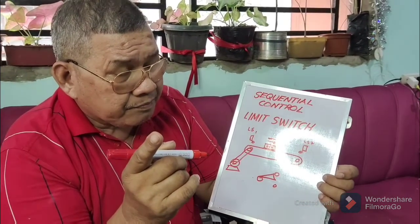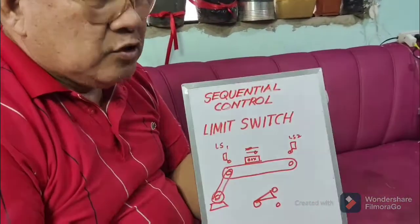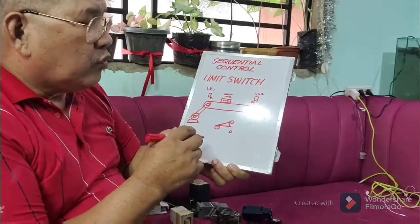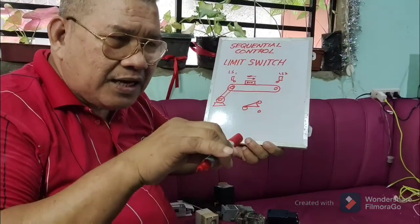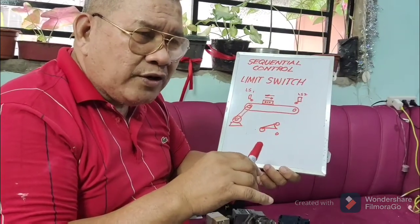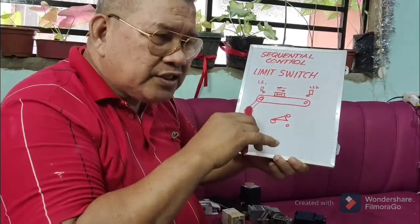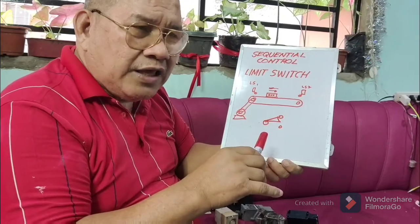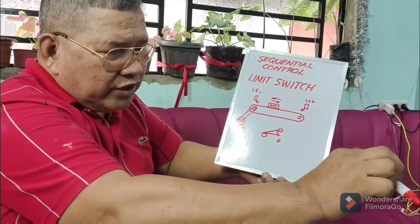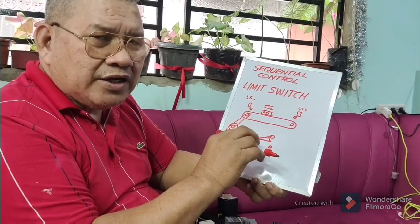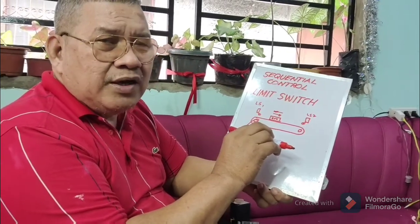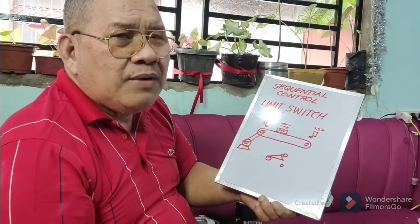Held closed and held open are different from normally open and normally closed. When we say held open, there is already something pushing the limit switch — that is what you call held open. When the holding coil is energized, or when a box or object hits it, the normally open will close. We also have held closed — it is already being pushed. So when the conveyor is already working or energized, the box will be removed.